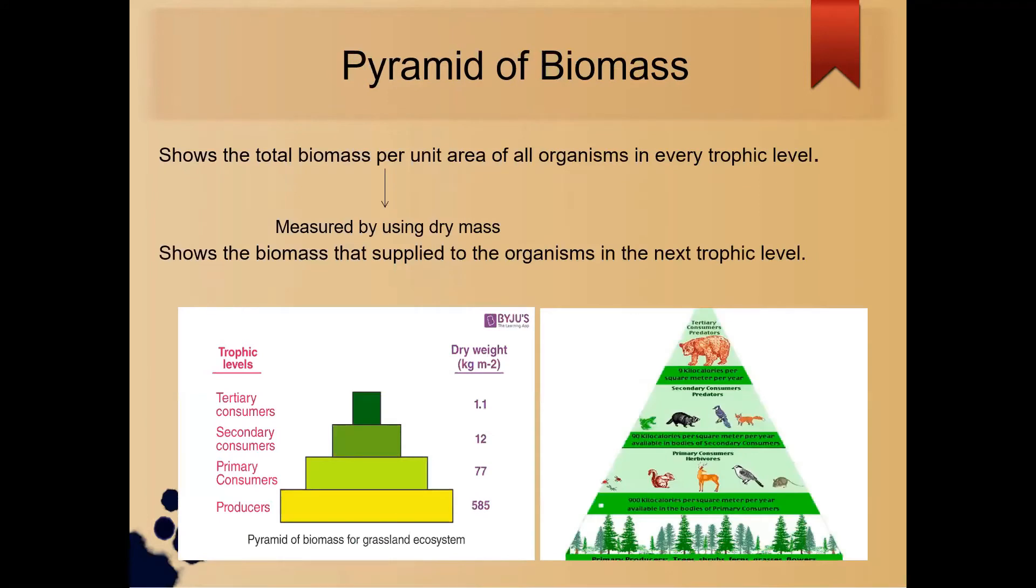Then I will continue to introduce about the pyramid of biomass. Pyramid of biomass shows the total biomass per unit area of all organisms in every trophic level. It is measured by using the dry mass of the organism and it shows the biomass that supply to the organism in the next trophic level. And there are the diagrams just for your reference.